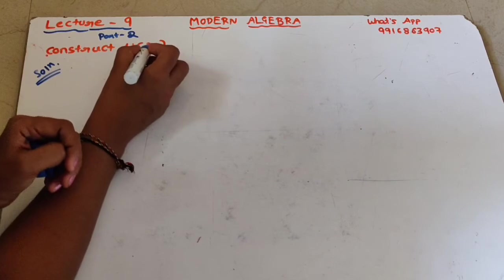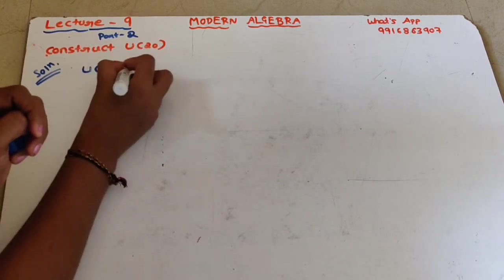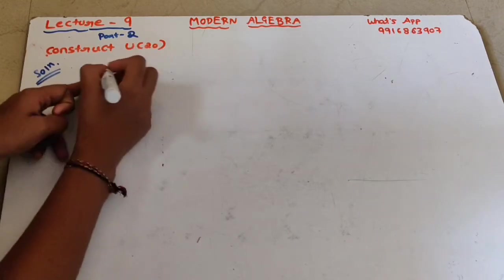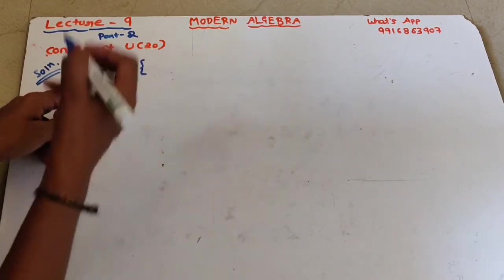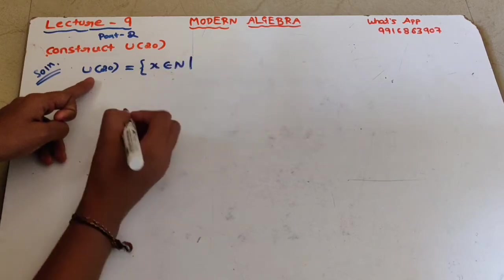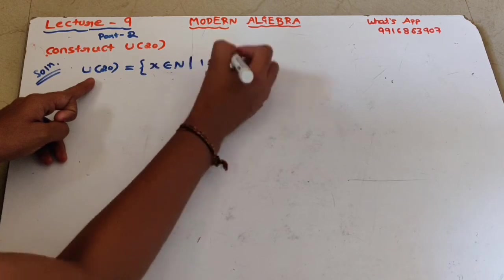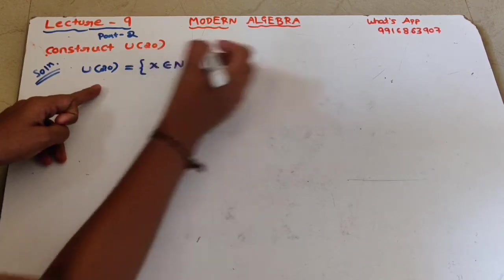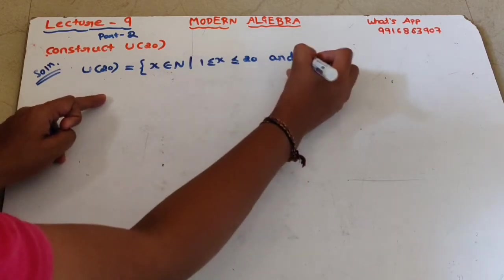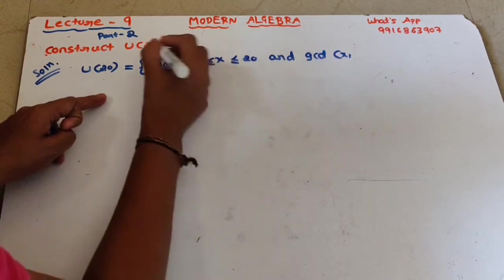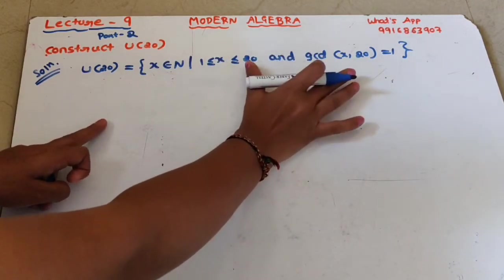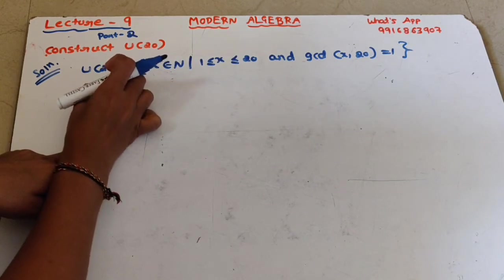For the solution, the given value is U(20). According to the definition, U(20) contains elements x such that x belongs to the natural numbers, x is between 1 and 20, and gcd(x, 20) = 1. If both conditions are satisfied, we include that element in the unitary set.